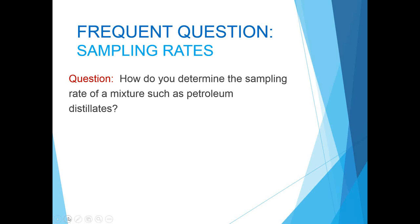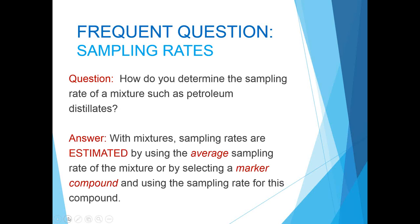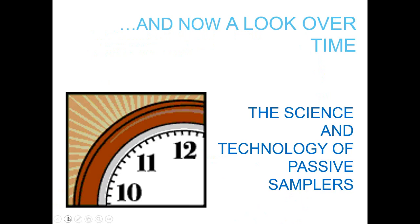Another common question is how to determine the sampling rate of a mixture, such as petroleum distillates. With mixtures, the sampling rates are estimated by one of two ways: first, we can assign an average sampling rate based on the chemicals in the solvent mixture; or you can look at the SDS yourself, select a marker compound that is in high concentration, and use the sampling rate for that single compound. Either way, the results are an estimate of exposures but can provide some screening levels.